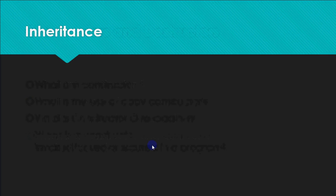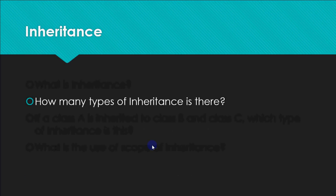Then comes inheritance — another important feature of object-oriented programming. What is inheritance? It is a feature of creating a new class using the features of an existing class. The major reason behind inheritance is reusability of code: if you already have a class and are making a similar one, you don't have to start from scratch — you can just add a few features to the existing class and get a new class altogether.